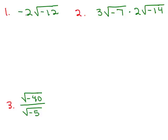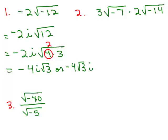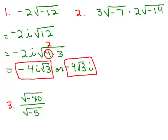For number 1, I have the negative 2 on the outside and a square root of a negative number on the inside, so I can write that as i times the square root of 12. Then we simplify the square root of 12 by writing it as the square root of 4 times 3, and a 2 comes out. So we end up with negative 2 times 2 on the outside, which is negative 4i square root of 3, or you could write that as negative 4 square root of 3 times i — just make sure the i is not underneath the square root symbol. Both forms are correct.